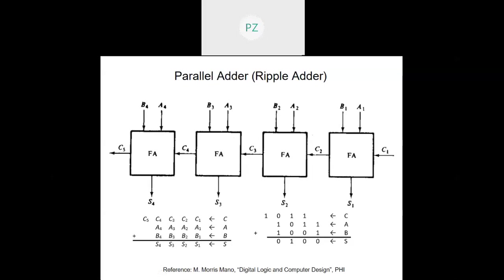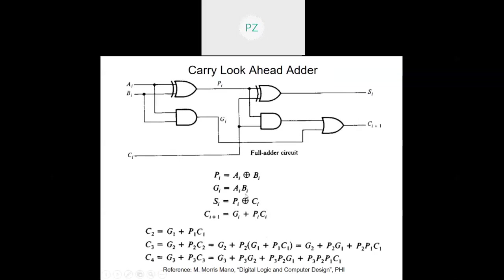Although this design is modular — you just design the i-th stage and repeat it as many times as the number of bits — the serious flaw is that the carry ripples through, making the circuit slower, particularly when the number of bits is large. As you add more bits it gets slower and slower. To solve this ripple-carry problem we have what is called the carry look-ahead adder. To understand it, remember how we realize a full adder using two half adders: one half adder takes ai and bi, and another follows it.